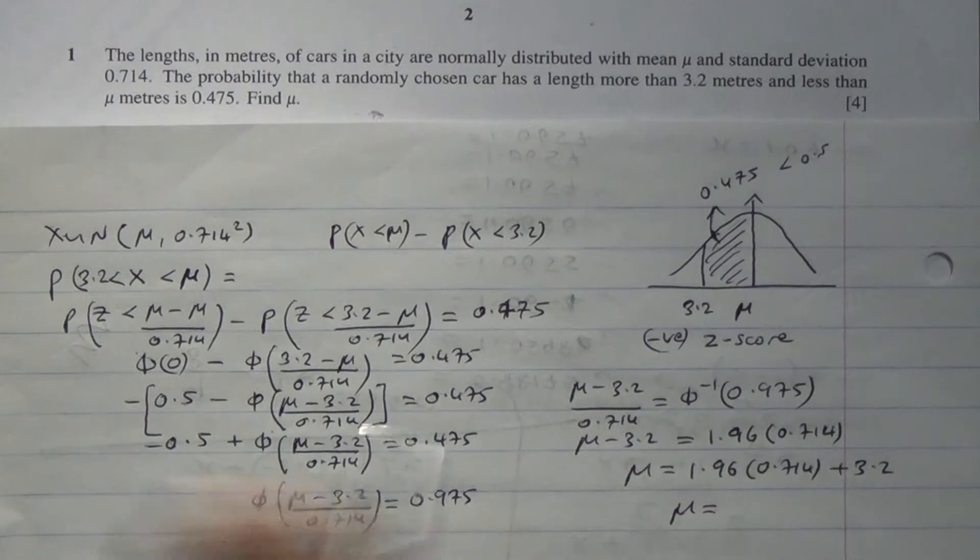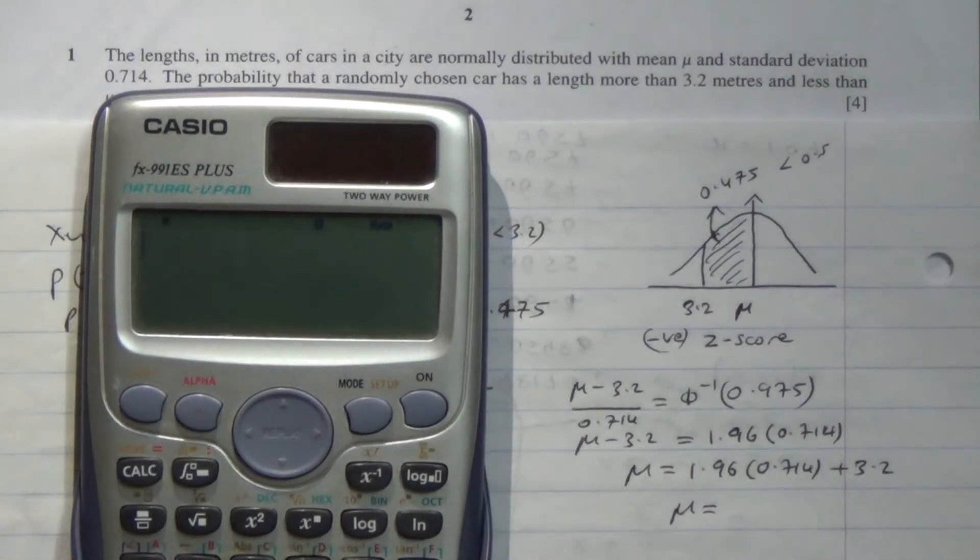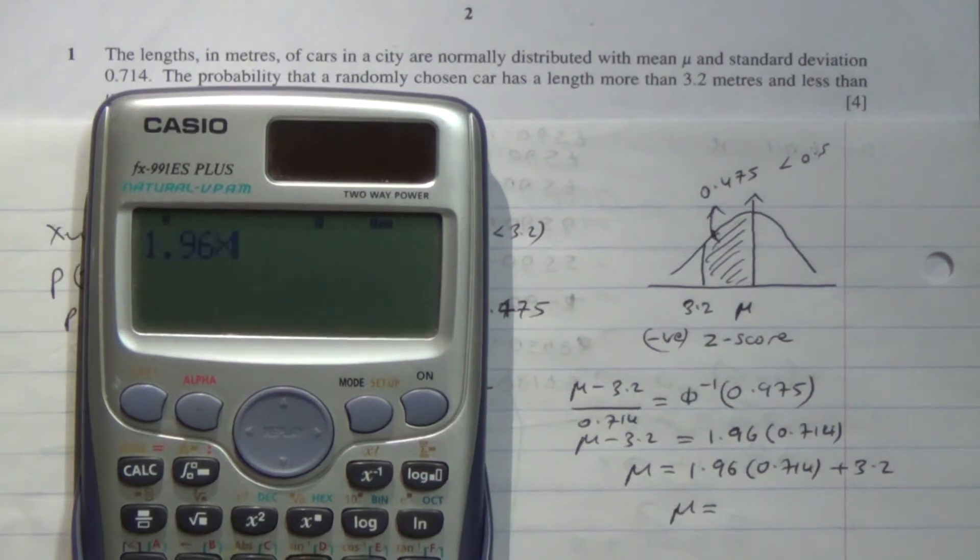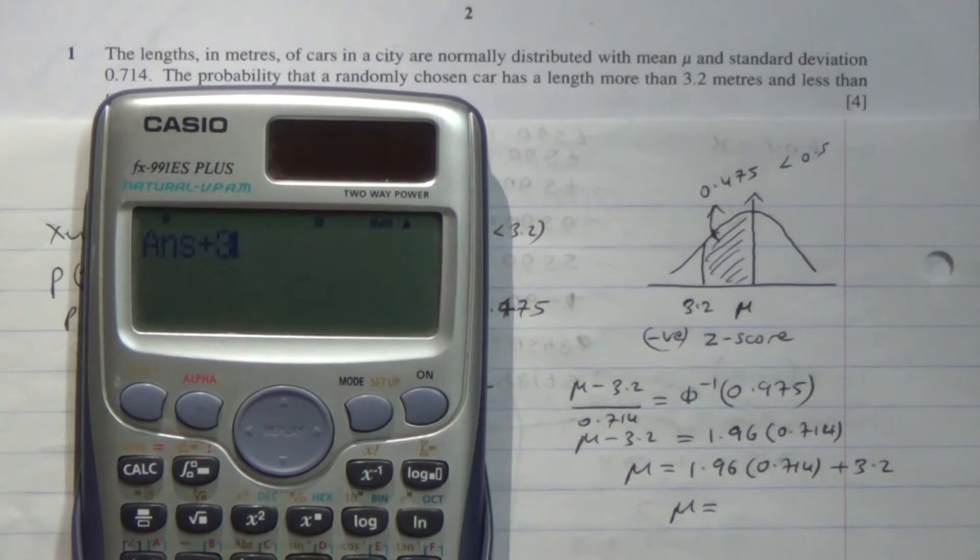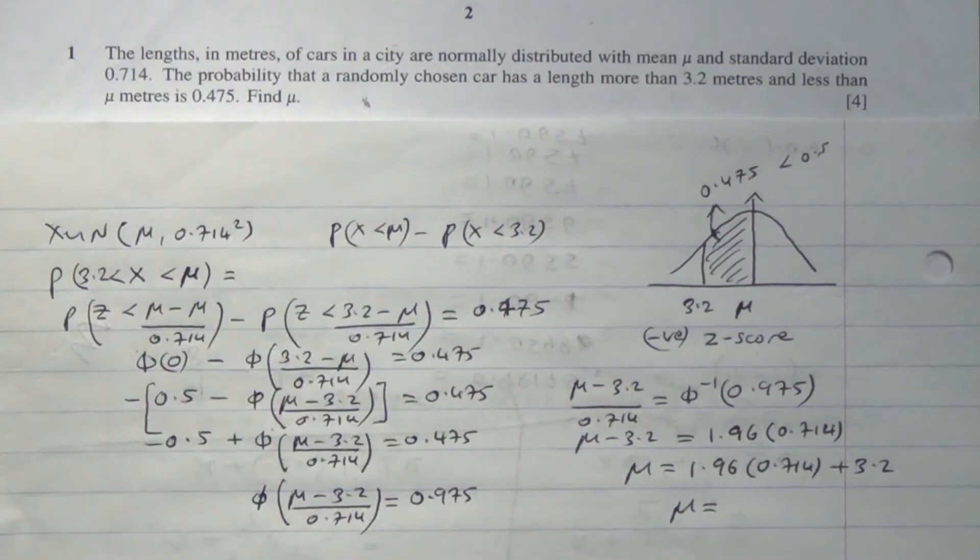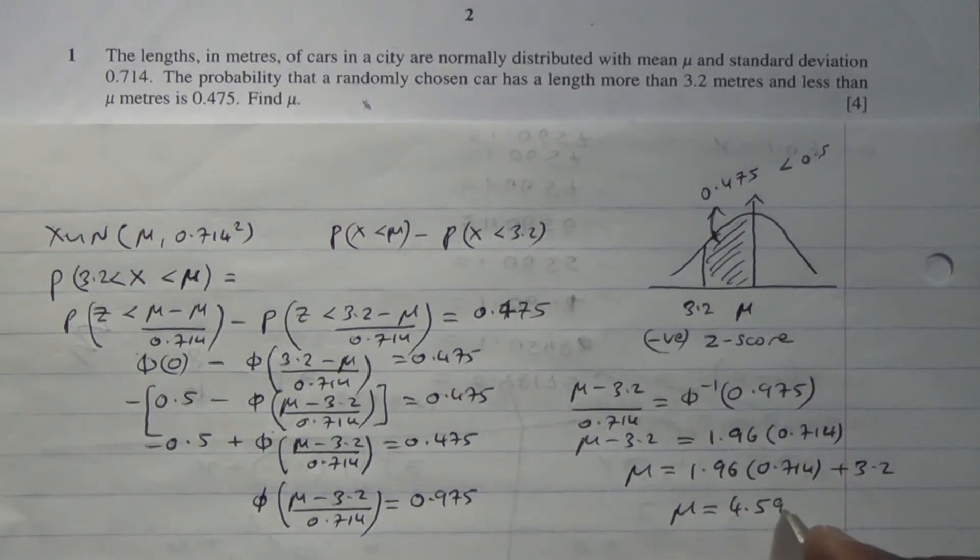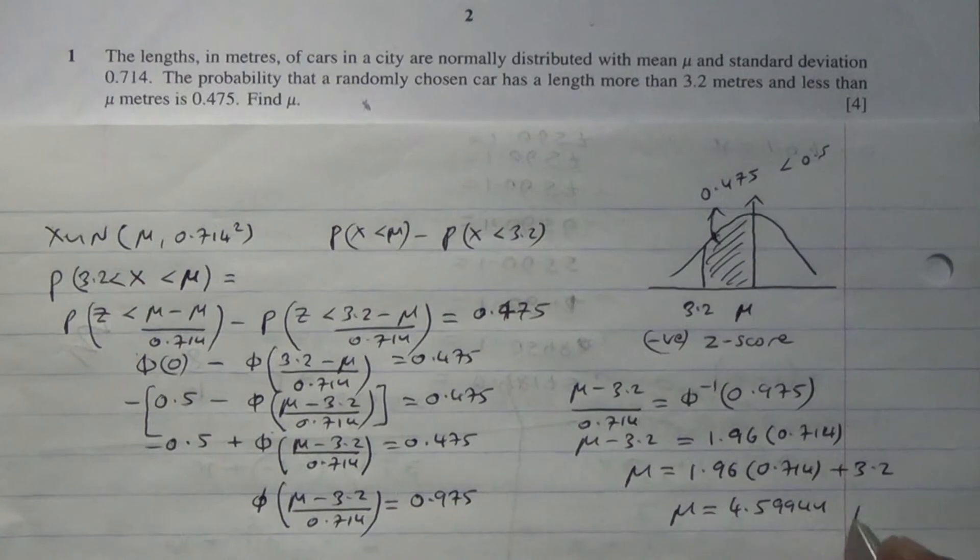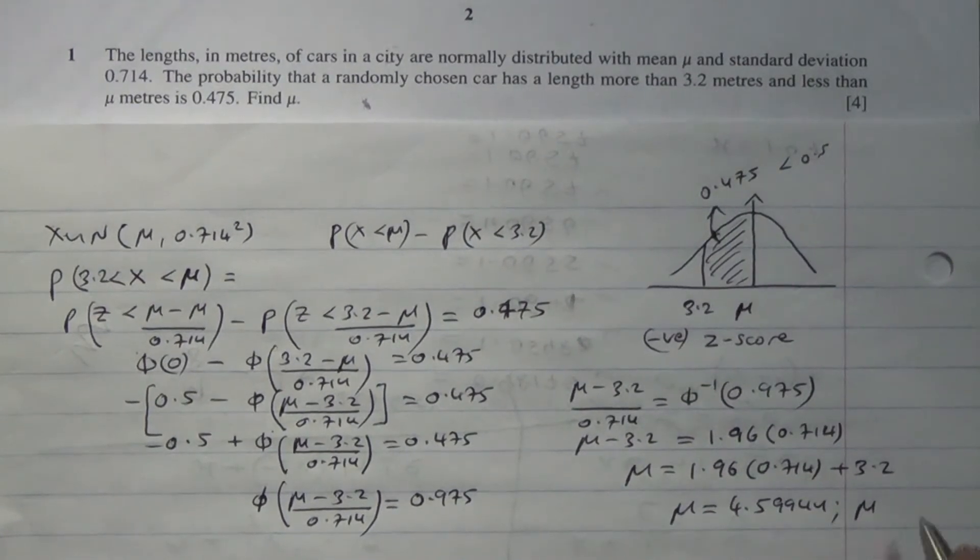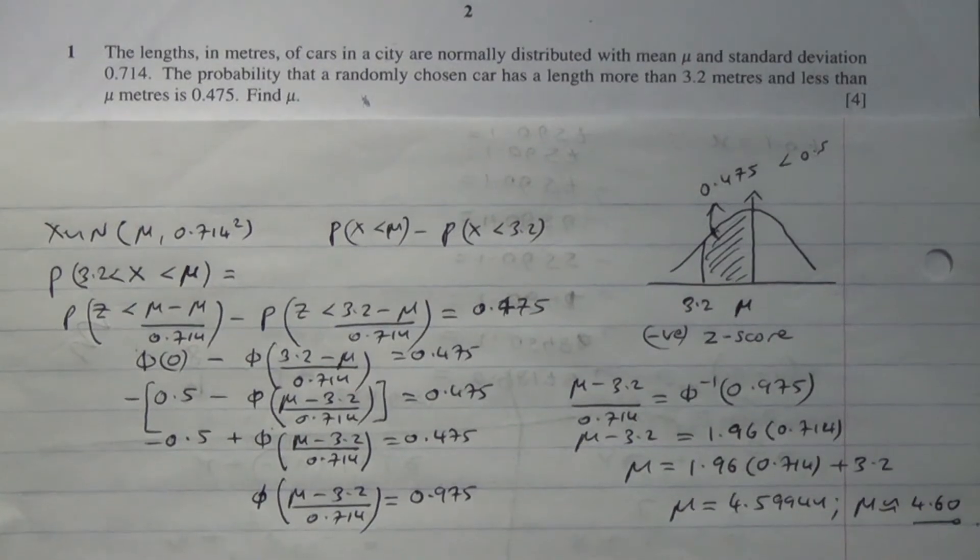So mean mu is going to be equal to... Let's do this in our calculator quickly. 1.96 times 0.714 plus 3.2 and that's 4.5994. The mean mu is therefore approximately 4.60 to 3 significant figures.